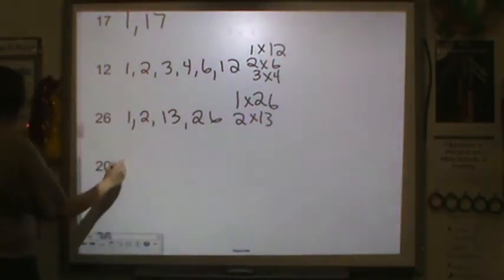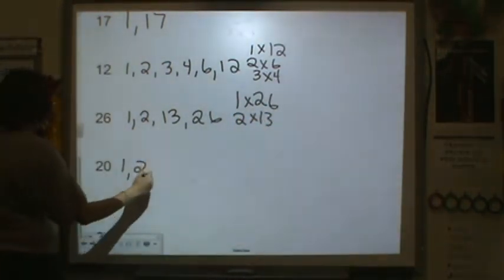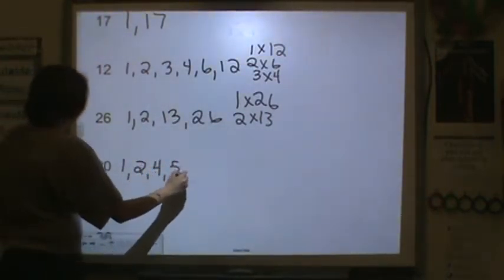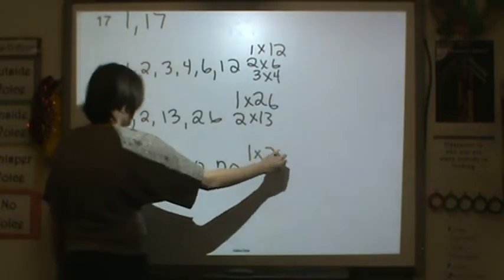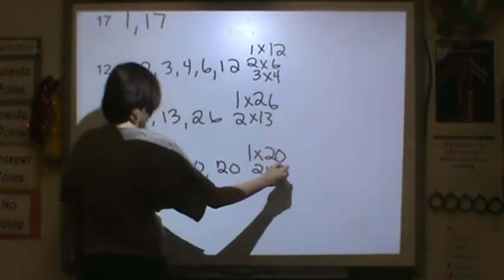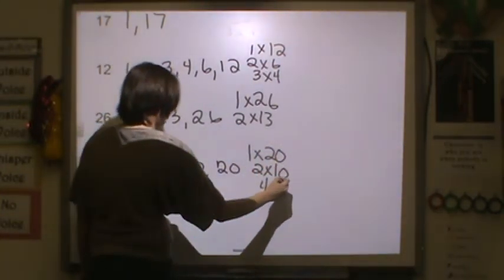20. 1, 2, 4, 5, 10, and 20. 1 times 20, 2 times 10, 4 times 5.